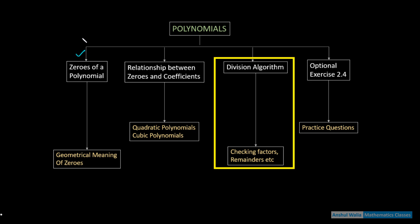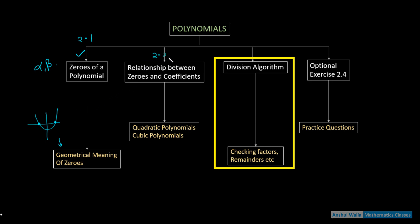So far we have done zeros of polynomials in Exercise 2.1, where we had quadratic equations and splitting the middle term. We also studied the relationship between zeros and coefficients.